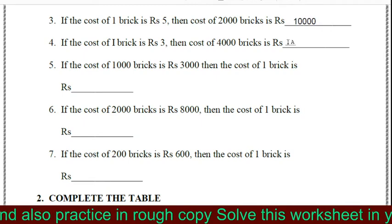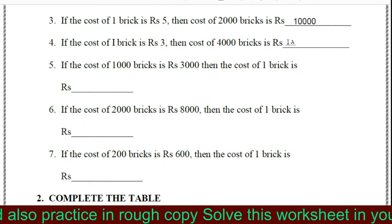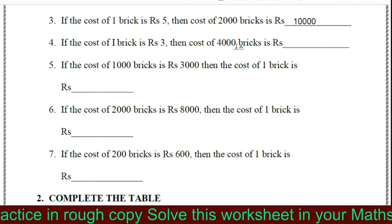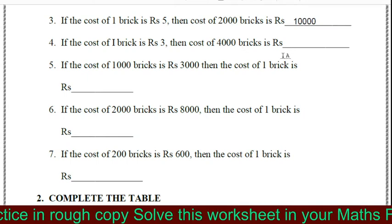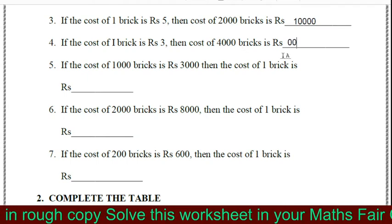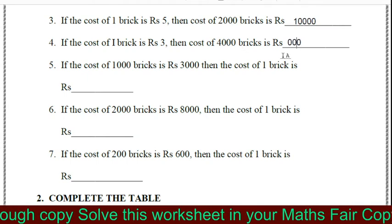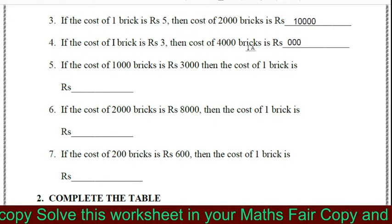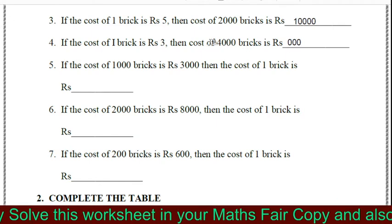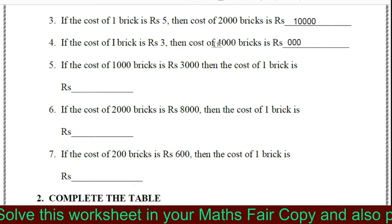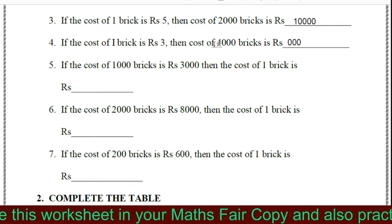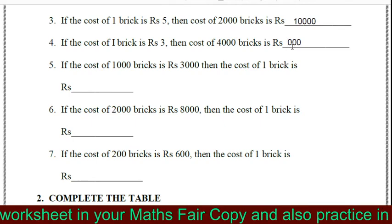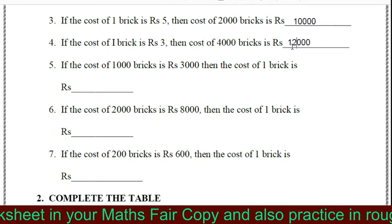Similarly we have to do this question also. How many zeros here? There are 3 zeros, so we write the 3 zeros here, and now we multiply 4 and 3. So 4 ones are 4, 4 twos are 8, 4 threes are 12. So the answer will be 12,000 rupees.